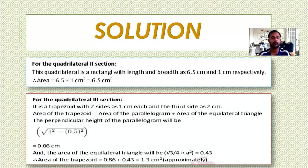Therefore, area of trapezoid is area of parallelogram 0.86 plus area of equilateral triangle 0.43, that means 1.3 cm² approximately.